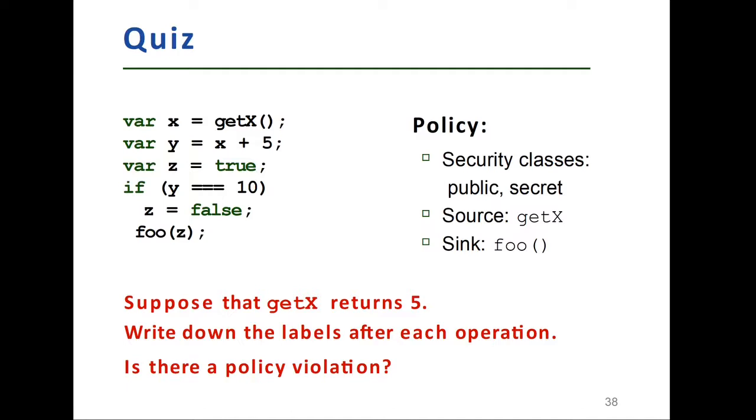Now I have a quiz for you. You can pause this video and think about how to basically resolve it. Suppose that get X, which is a function, returns 5. Write down the labels after each operation. Is there any policy violation here? On the right side, you can see our policy.